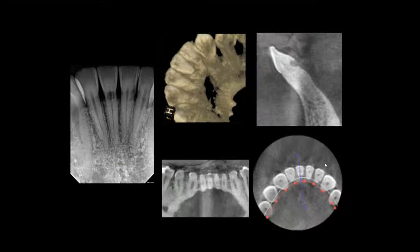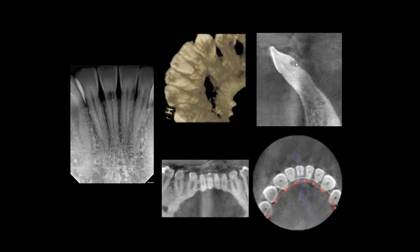Over the years we've seen a lot of applications. Here is a case of root resorption where two-dimensional radiography did show it, but I couldn't tell the location or the extent of it. With cone beam CT, you can now see whether it invaded the root canal area, the location of it, and the extent of it — which has a huge impact on treatment obviously.